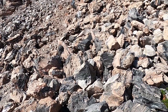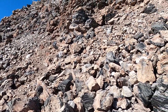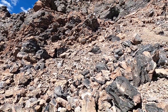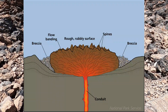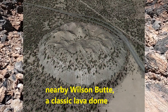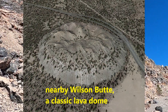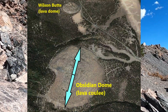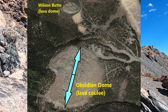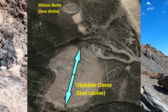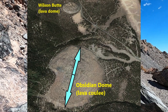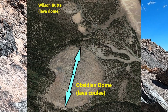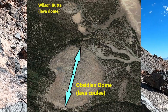Obsidian Dome is actually not accurately named, at least in terms of geologic names we apply to volcanic structures. A lava dome comes out of a central vent and piles up around it without flowing very far. But if you look at a satellite or Google Earth view of Obsidian Dome, it's actually elongated — it's what's called a coulee, a lava coulee, a hybrid between a lava flow and a lava dome. The lava here has oozed up out of the vent but moved downhill a bit, forming a more elongated structure.